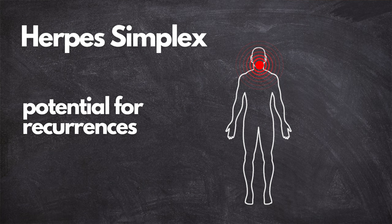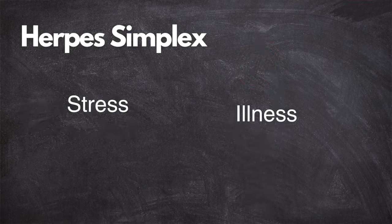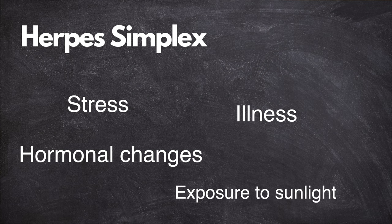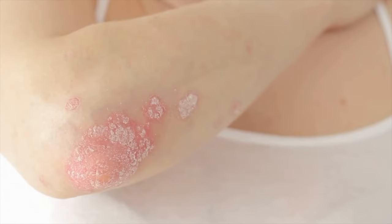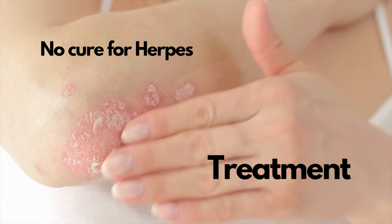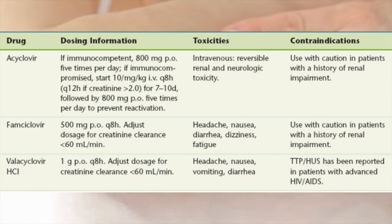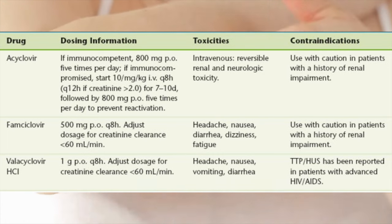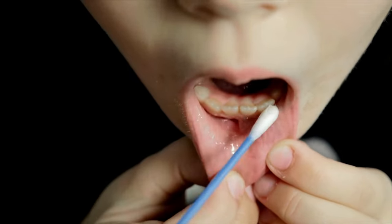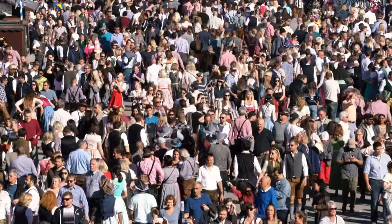Various factors can trigger these recurrences, including stress, illness, hormonal changes, exposure to sunlight, and a weakened immune system. While there is no cure for herpes simplex, there are treatment options available to manage the condition. Antiviral medications such as acyclovir, valacyclovir, or famcyclovir are commonly prescribed to help control outbreaks, reduce symptoms, and lower the risk of transmission. These medications can shorten the duration of outbreaks and alleviate discomfort. Additionally, maintaining a healthy lifestyle, managing stress levels, and practicing safe sex can all contribute to managing herpes effectively.